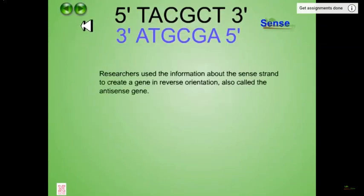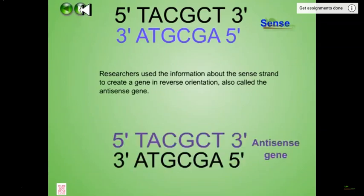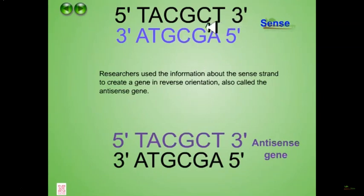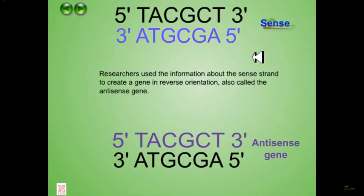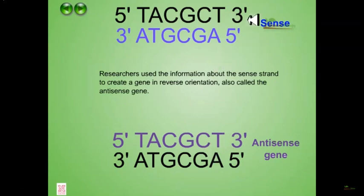Researchers used information about the sense strand to create a gene in reverse orientation, also called the antisense gene. If the antisense gene is produced, the gene coding for the sense region is changed — the sense gene becomes antisense and the antisense becomes sense. The antisense mRNA is complementary and in reverse orientation to the sense mRNA, running from 3' to 5' versus the sense strand's 5' to 3'.